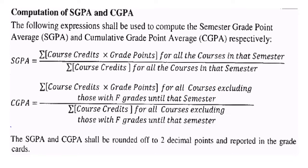To calculate CGPA you need a minimum of two semesters — it cannot be calculated for a single semester. For CGPA, you exclude F grades until that semester, both in the numerator and denominator. SGPA uses the common formula with all courses, while CGPA excludes F grades. Both SGPA and CGPA shall be rounded to two decimal points.